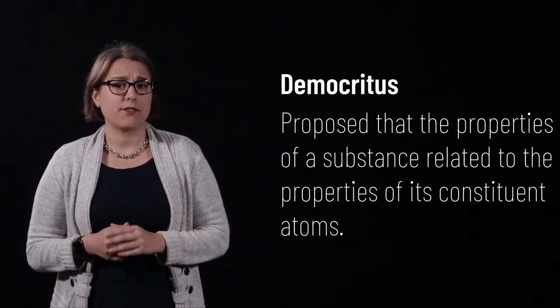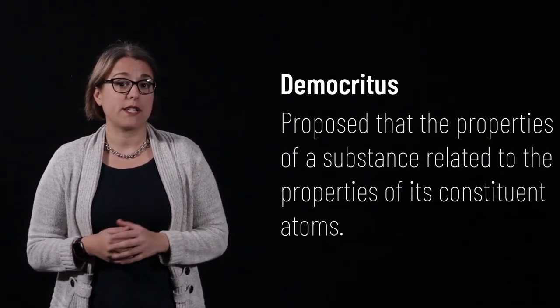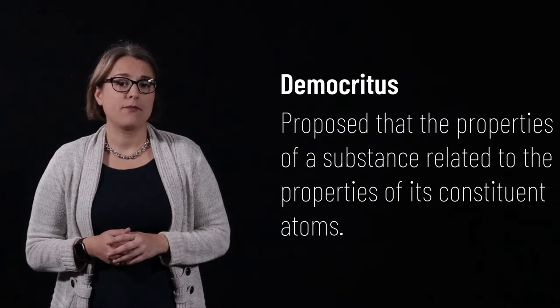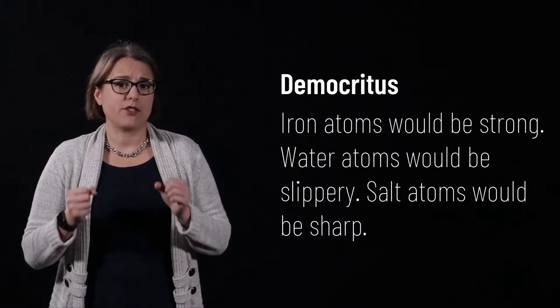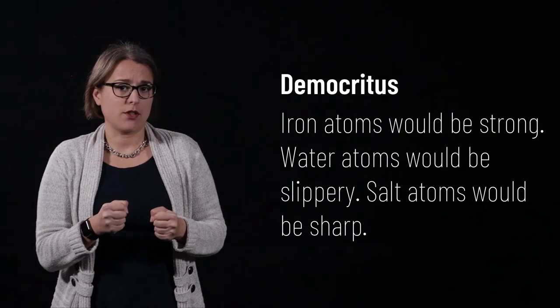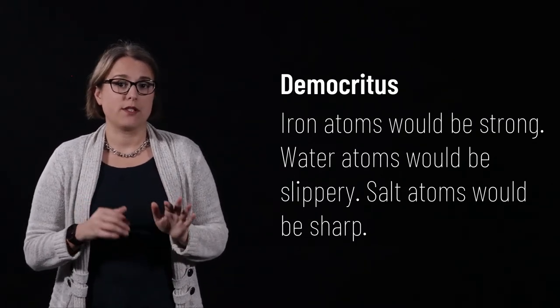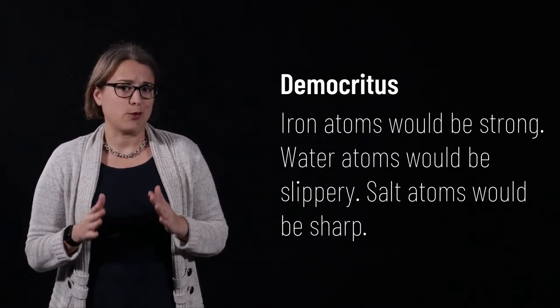He said that the properties of a substance related to the properties of the atoms that made it. Iron would be composed of very strong, interlocking atoms. Water atoms would be smooth and slippery. Salt atoms would be sharp and pointed. Many theories, such as these, made in this time period, came about due to philosophical discussions and reasoning. It would be almost 2,000 years before observations and experimental evidence were used in a systematic pursuit of scientific truth.